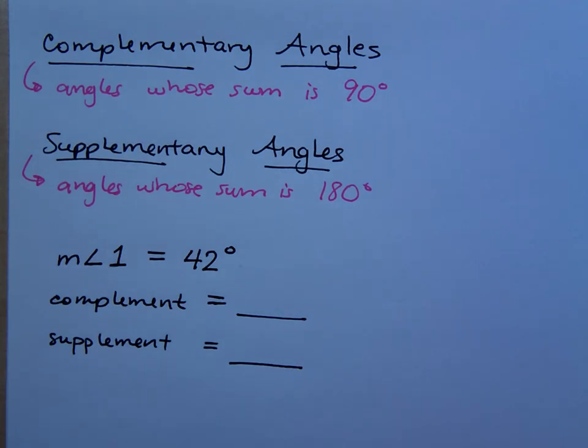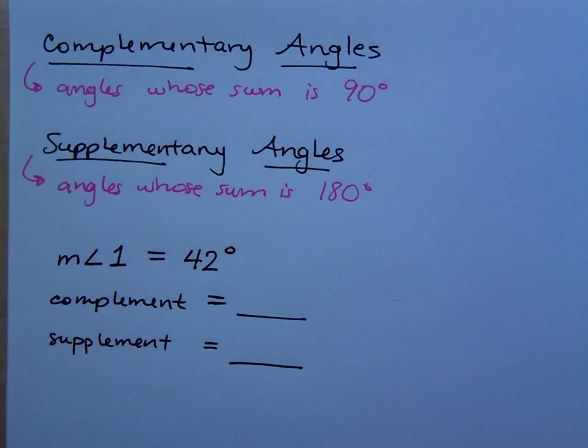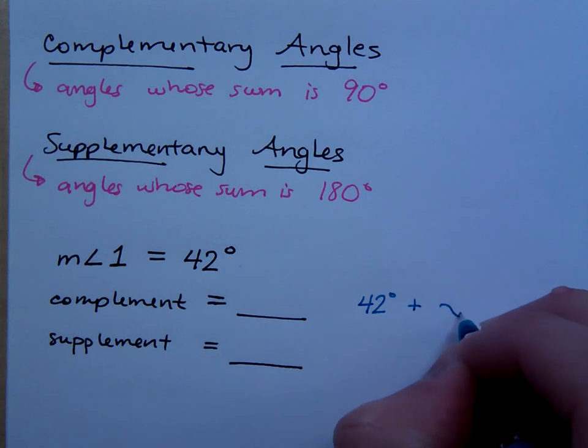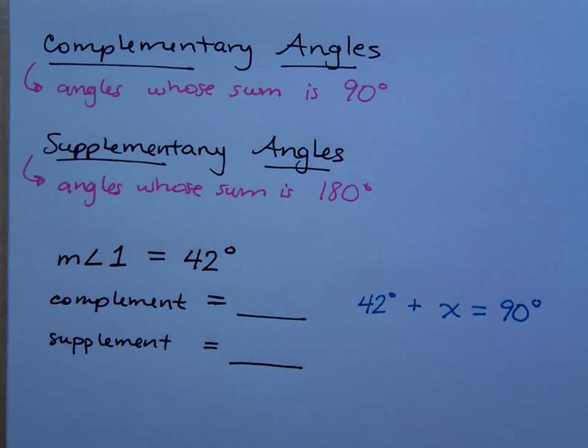So, this is where it goes back to algebra. I mean, this is stuff that you could do even without the algebra, but you're really doing algebra, even if you don't think you are. I said for the complement, that means it's angles who add up to be 90 degrees, right? So, for this guy right here, that means I should have 42 degrees plus something else, and that should equal 90 degrees. How would I figure out what that other angle measure would have to be?